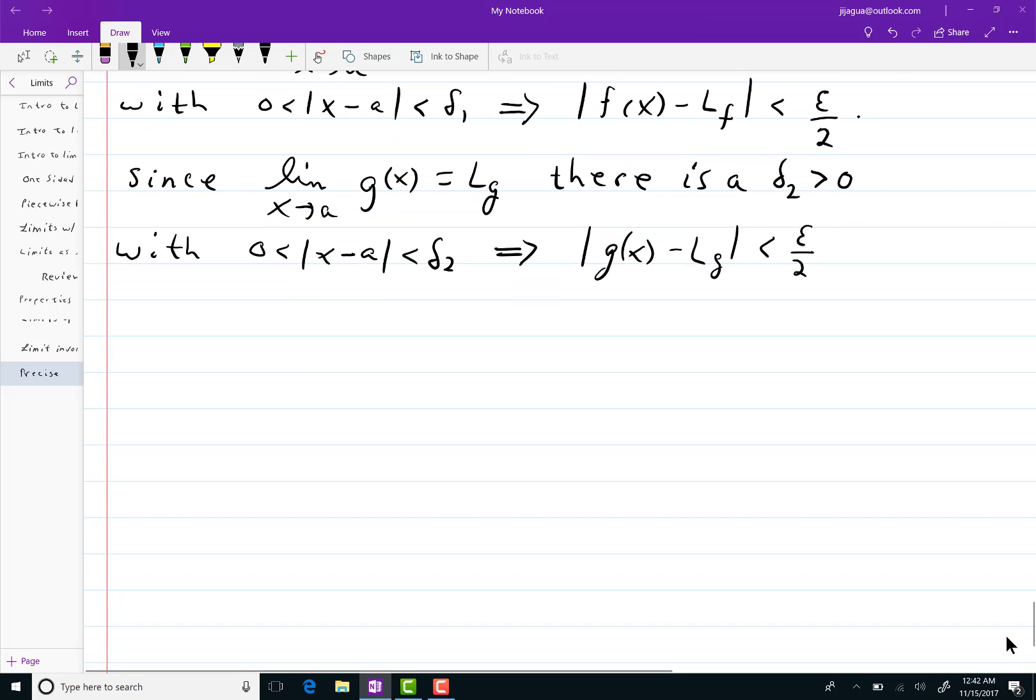So then, I want to let delta, this is the one you're always supposed to be finding, equal the minimum between delta 1 and delta 2.